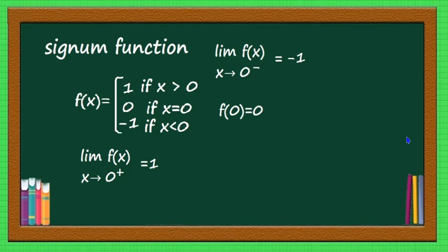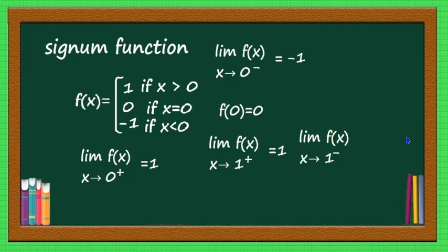For the same function, instead of x = 0, let us take limit x tends to 1+. Here 1+ is positive, so limit x tends to 1+ of f(x) = 1. And limit x tends to 1-: a number slightly less than 1 is also positive, so limit x tends to 1- of f(x) = 1. And f(1) = 1.